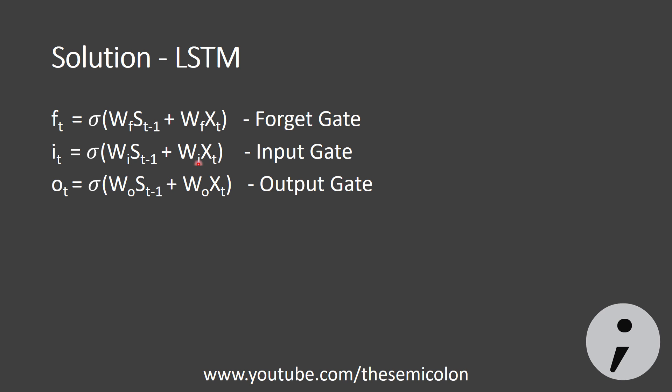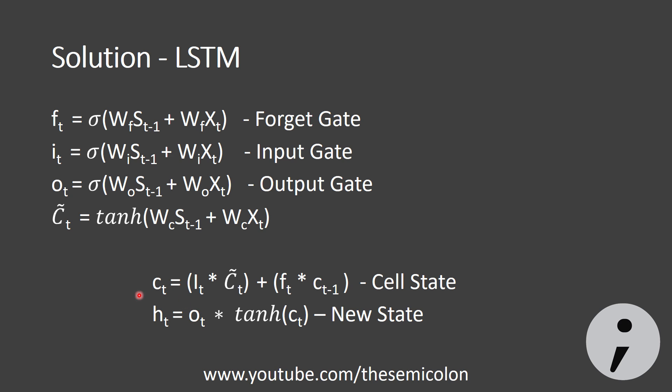Here, C dash can be called as an intermediate cell state. Then we calculate CT which is the cell state using this function. The input gate and intermediate cell state are added with the old cell state and the forget gate. Then we pass the cell state through the tanH activation and then multiply with the output gate. Note that all the multiplications are element-wise multiplications.